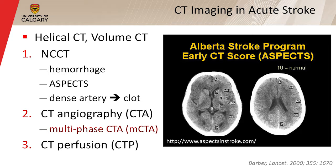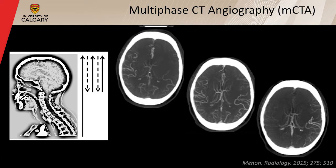CT imaging in acute stroke is generally done on a helical or volume CT scanner. The first step is a non-contrast CT scan — very useful for looking at hemorrhage. We can also do an ASPECTS score, which is a CT version of diffusion without the light bulb. ASPECTS is a codified system of topographically evaluating the brain for subtle changes on CT associated with ischemic stroke. We can also look for the dense artery sign, giving information about clot location, and we can do CT angiography and CT perfusion.